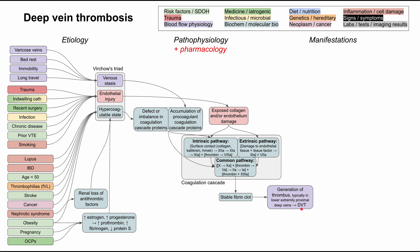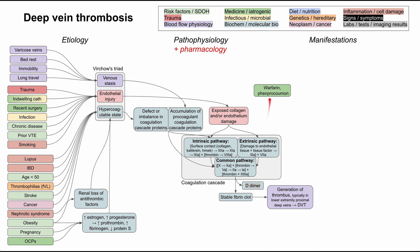Before discussing manifestations, let's briefly cover pharmacology and how anticoagulant medicines enter this pathway. D-dimers, which you might see on labs, come from the breakdown of the fibrin clot. Warfarin is a common oral anticoagulant that blocks vitamin K epoxide reductase, decreasing factors 2, 7, 9, and 10, as well as protein C and S. Warfarin has a direct blocking effect on the intrinsic and extrinsic pathways. Phenprocoumon is a similar medicine that acts likewise.